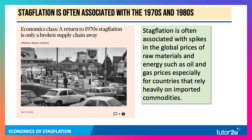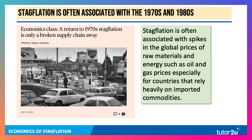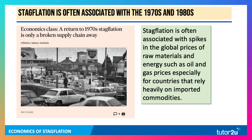We tend to refer to stagflation when we think back to the 1970s and 1980s, in particular the mid-1970s — and I'm old enough to remember this — where we had the first really big global oil price spike. The era of cheap oil came to an end and inflation locked up to more than 20%. Stagflation is often associated historically with spikes in the world price of key raw materials, oil and gas, especially affecting countries that rely heavily on importing those commodities.